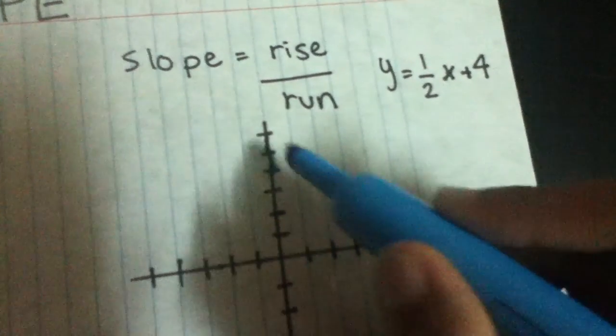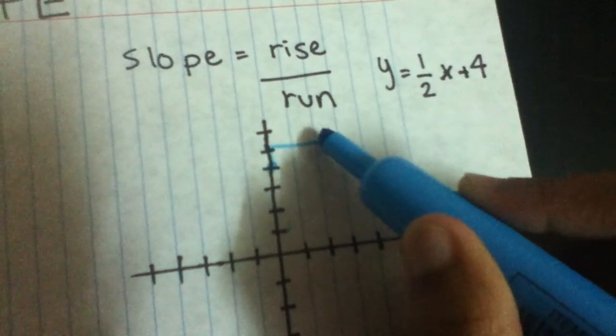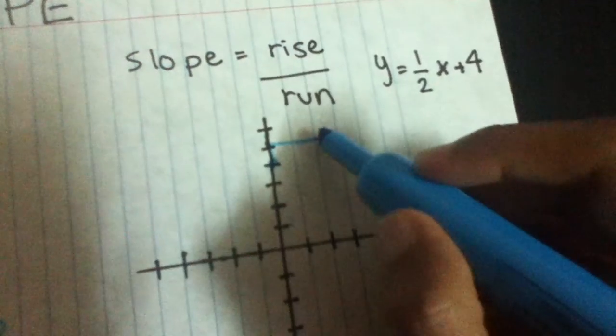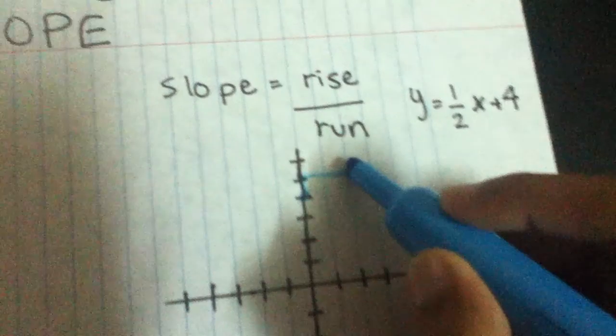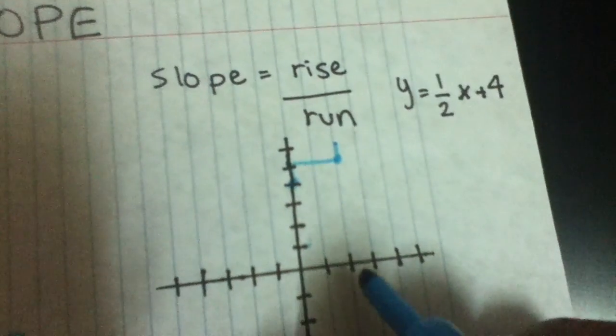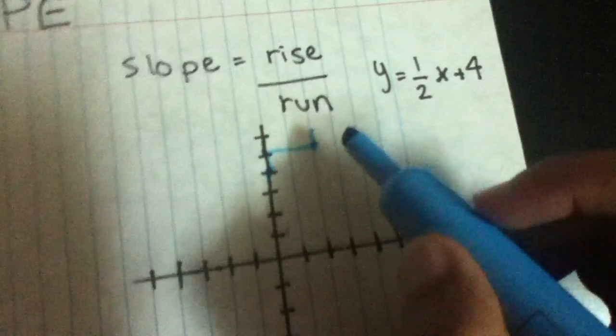So 1, 2. Like that. And then you can continue. Rise 1, and move 2.